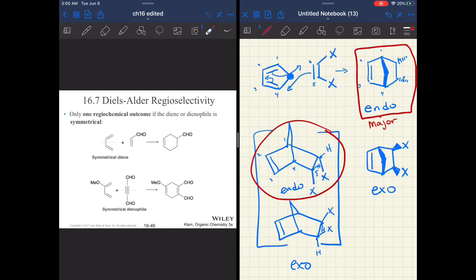We are going to finish up the conversation about regioselectivity and the Diels-Alder reaction in the fourth and final part of chapter 16. Thank you.